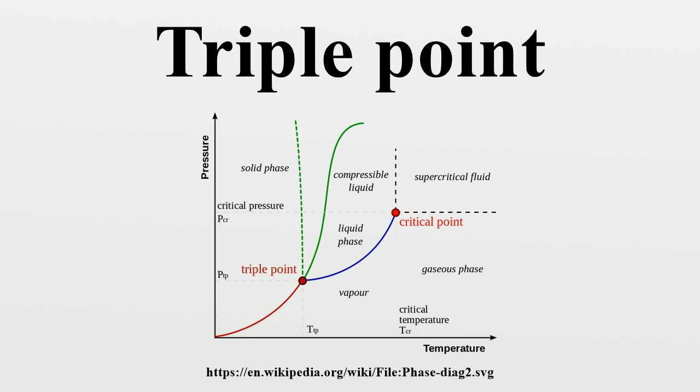For example, the triple point of mercury occurs at a temperature of minus 38.8340 degrees Celsius and a pressure of 0.2 millipascals.